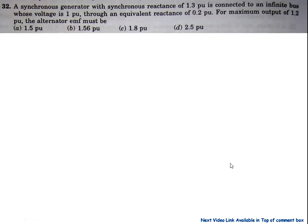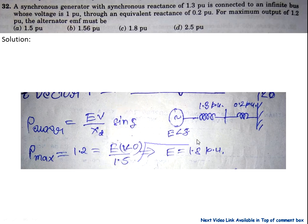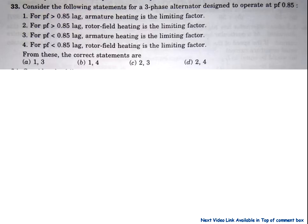Now come to question number 32. A synchronous generator with a synchronous reactance of 1.3 per unit is connected to an infinite bus whose voltage is 1 per unit, through an equivalent reactance of 0.2 per unit. For a maximum power output of 1.2 per unit, the alternator EMF must be — these are the options. The power equation is E·V/X, and for maximum power, sin(delta) equals 1 at delta = 90°, giving E equals 1.8 per unit. So option C is correct.